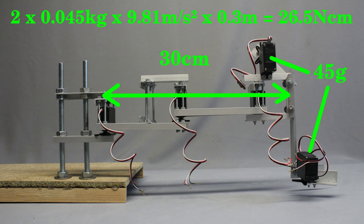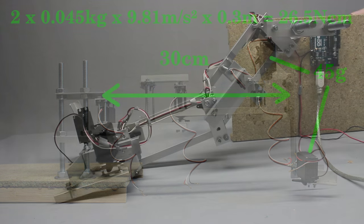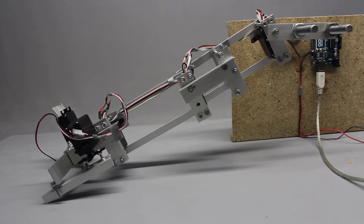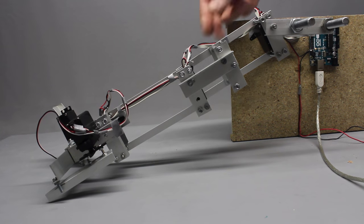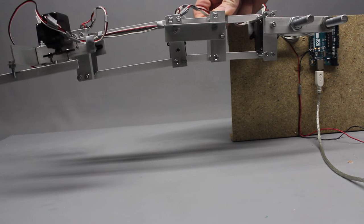...we get a resulting torque of approximately 27Ncm, which is equivalent to the maximum torque of the used servos. Thus, the servo at the first pivot point can't lift the robotic arm.